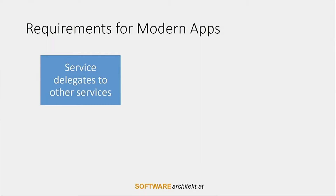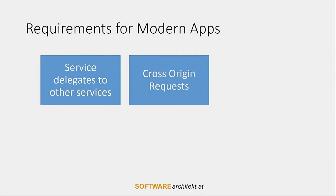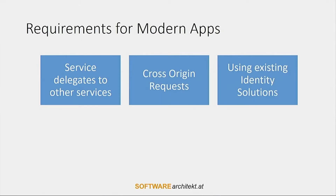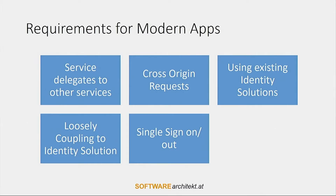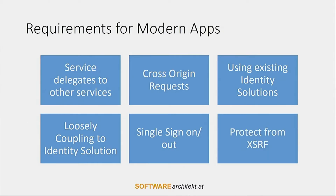In addition to that, there are some requirements. For instance, we need the possibility for one service to delegate to another service, and that service also needs to know who the user is. We need cross-origin requests. We need to include existing identity solutions like Active Directory or an LDAP system in your company. We also want to make the identity solution exchangeable — loosely coupled — because each customer will have their own identity solution and our application has to work with them all. Of course, we need single sign-on and single sign-out, and we also want to protect from attacks like cross-site request forgery.